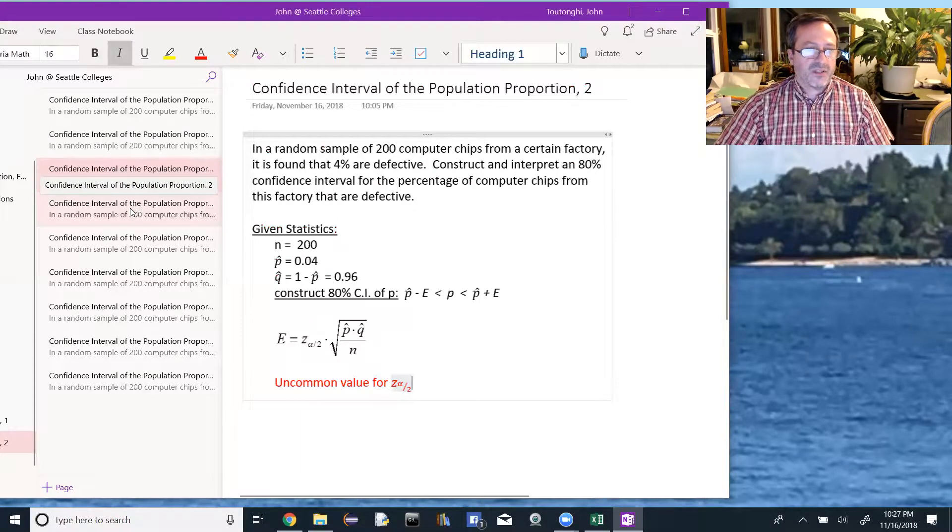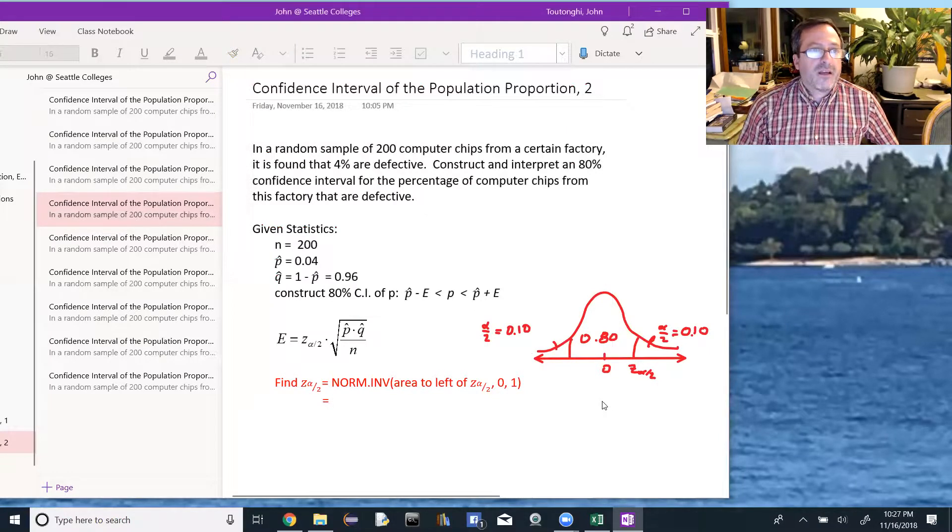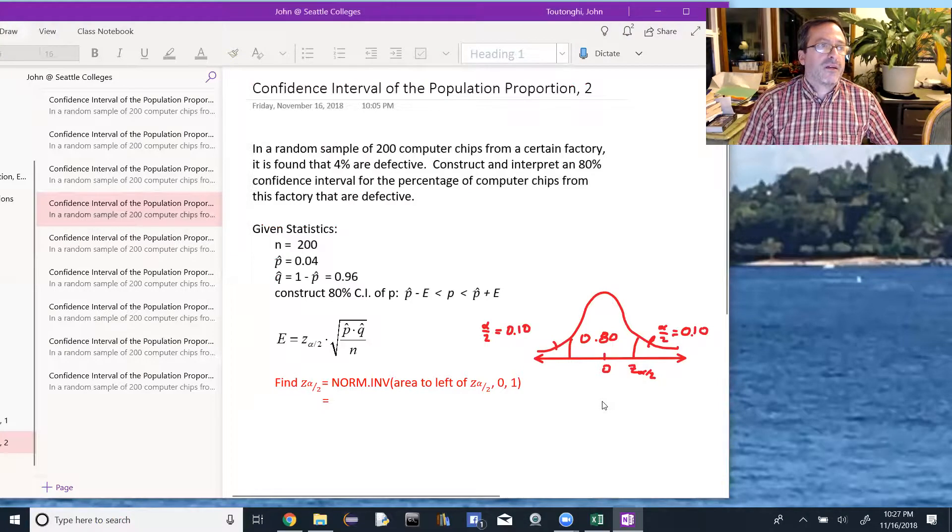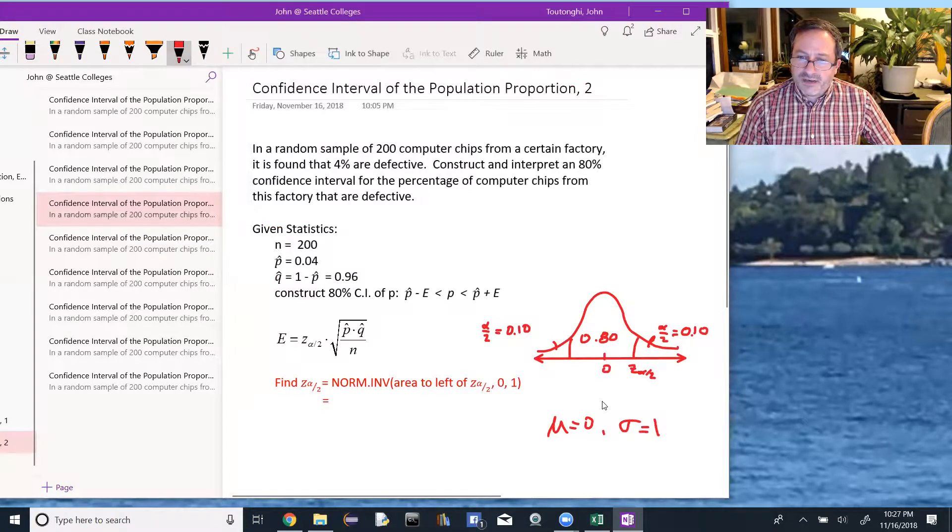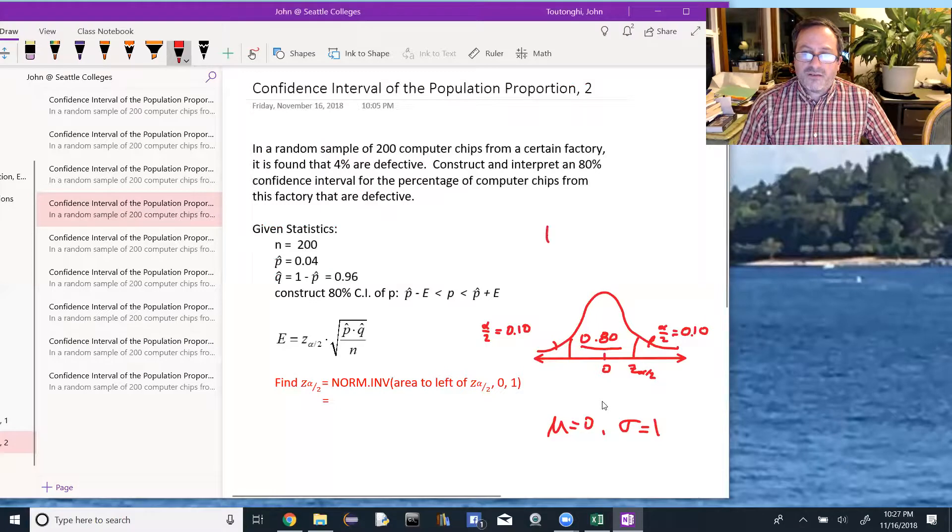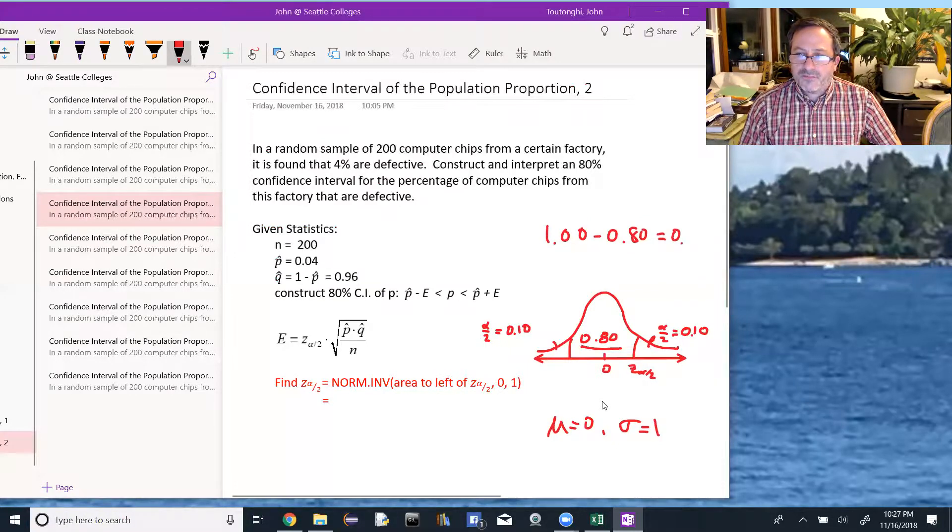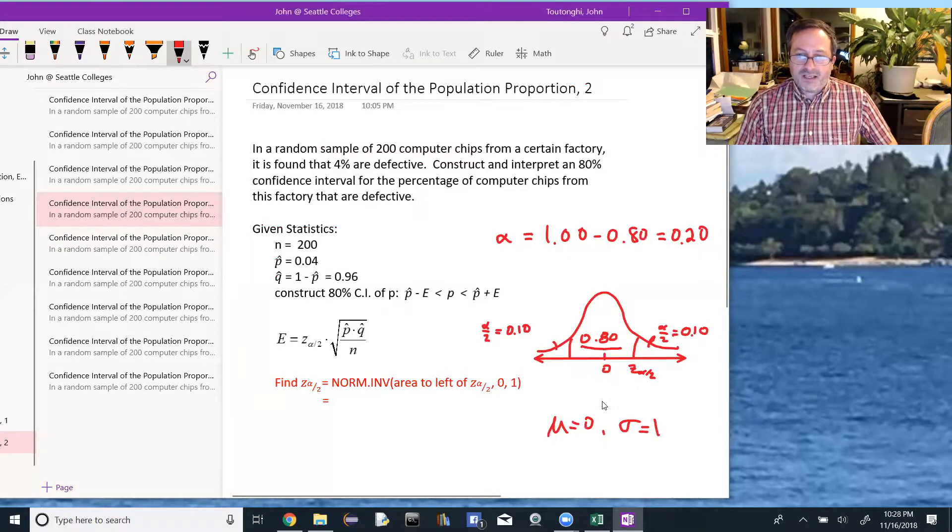So we need to find that. And we're going to use a standard normal distribution. So in a standard normal distribution, the mean is 0 and the standard deviation is 1. And the z alpha over 2 is over here on the right side of the mean such that we take the 80% and put it in the middle. And then whatever is left, it split between these two tails.